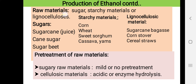The raw materials used for production of ethanol may be sugars, starchy materials, or lignocellulosic materials. Among sugars, sugarcane juice, cane sugar, or sugar beet can be used. Among starchy materials, corn, wheat, sweet sorghum, cassava, and yams may be used. Under lignocellulosic materials, sugarcane bagasse, corn stover, or cereal straws are used.